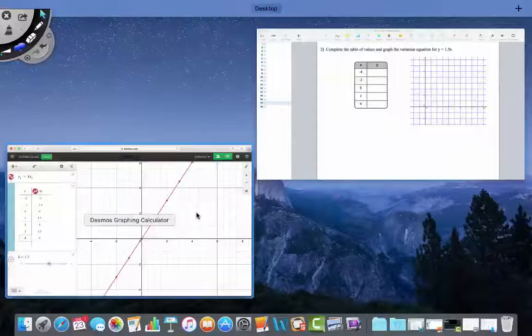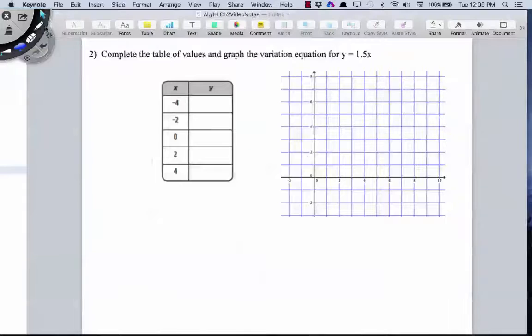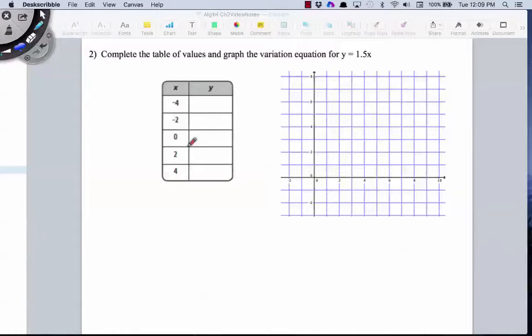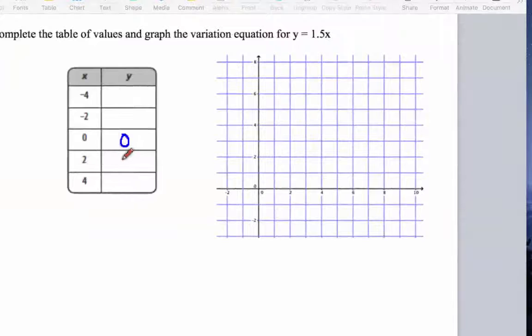So, let's go back to our notes now and fill in our table of values. 0, 0, 2, 3, 4, 6, negative 2, negative 3, negative 4, and negative 6.